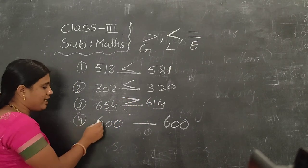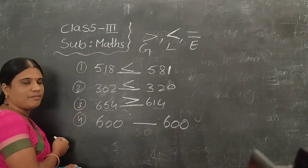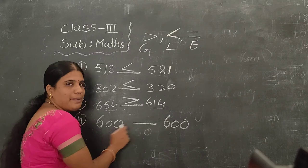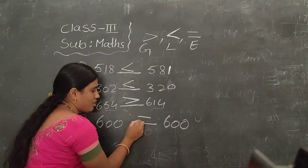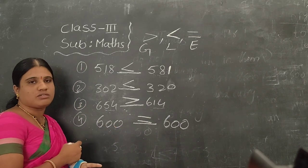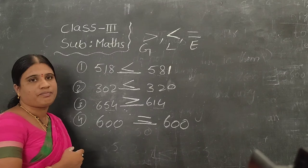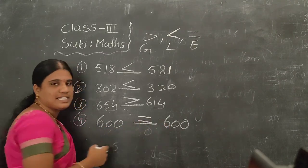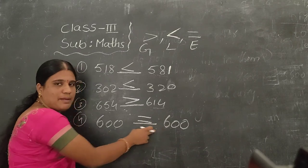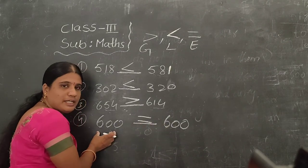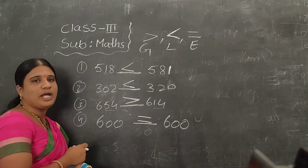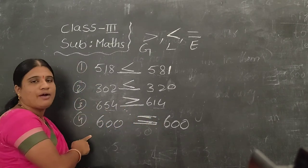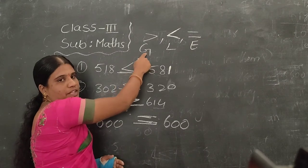In the fourth problem, here we have 600 and here also we have 600. That means here and here we have the same numbers. When we have the same numbers, we have to use the equal symbol. The first number is 600 and the second number is also 600 — these are the same numbers, so here we use the equal symbol.